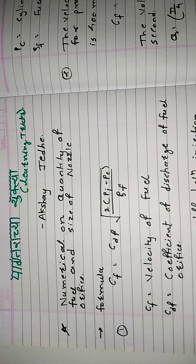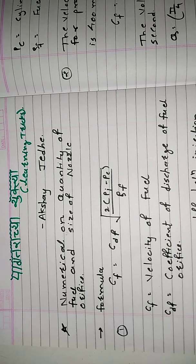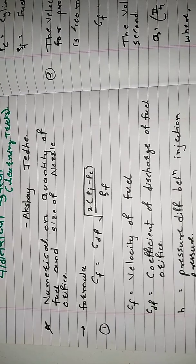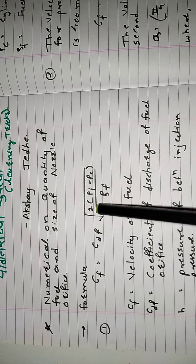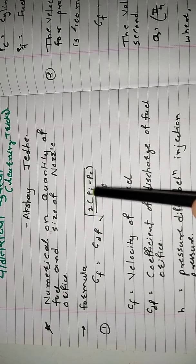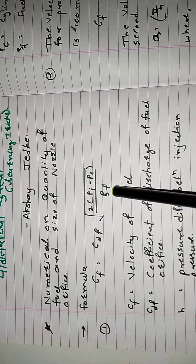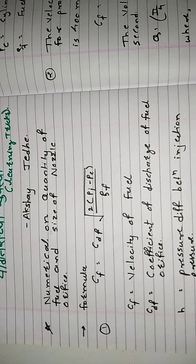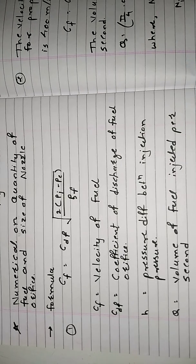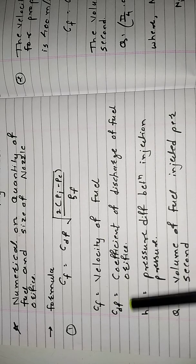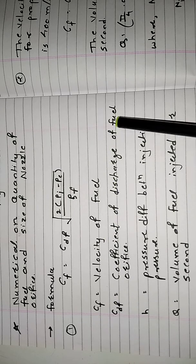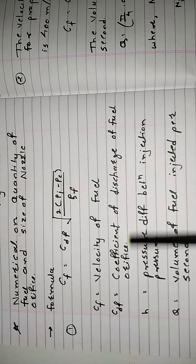First we will see the formula based on how we want to solve the numerical. The first formula is: CF equals CDF multiplied by the square root of 2 times (PI minus PC) upon rho F. CF means velocity of fuel, and CDF means coefficient of discharge of fuel through the orifice.